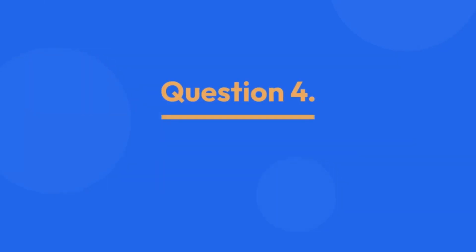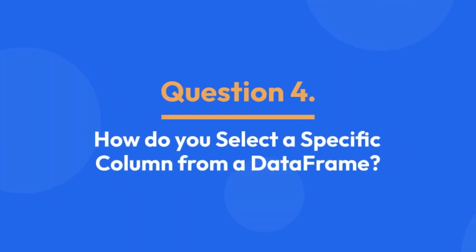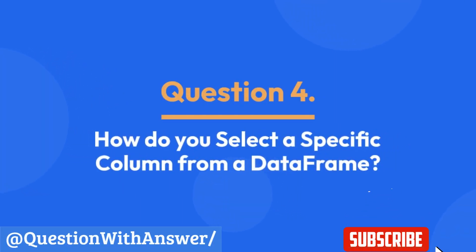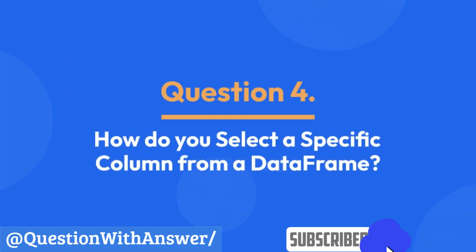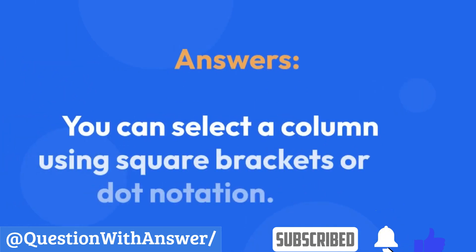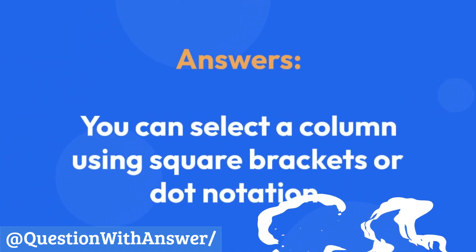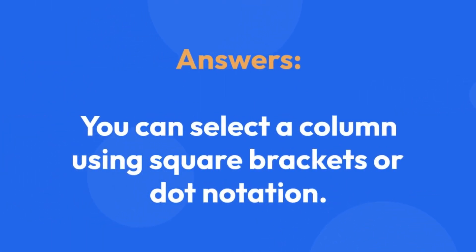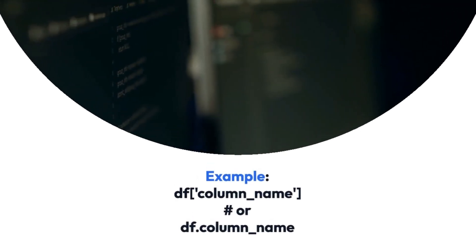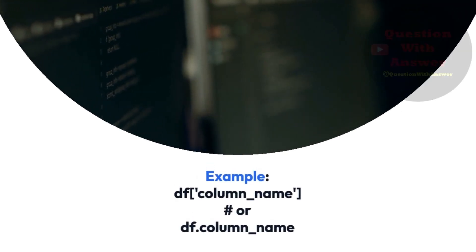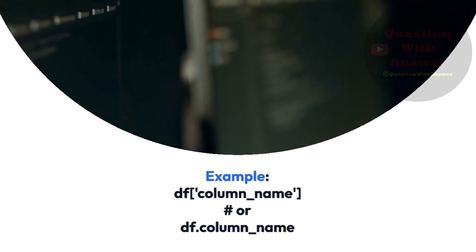Question 4: How do you select a specific column from a DataFrame? You can select a column using square brackets or dot notation. This is the example of how you can select a specific column from a DataFrame.